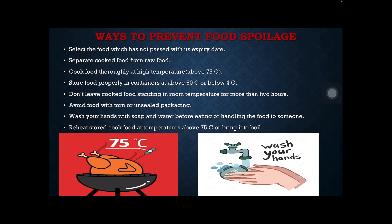Ways to prevent food spoilage: select food which has not passed its expiry date. Separate cooked food from raw food. Cook food thoroughly at high temperature above 75 degrees Celsius. Store food properly in containers at above 60 degrees Celsius or below 4 degrees Celsius.